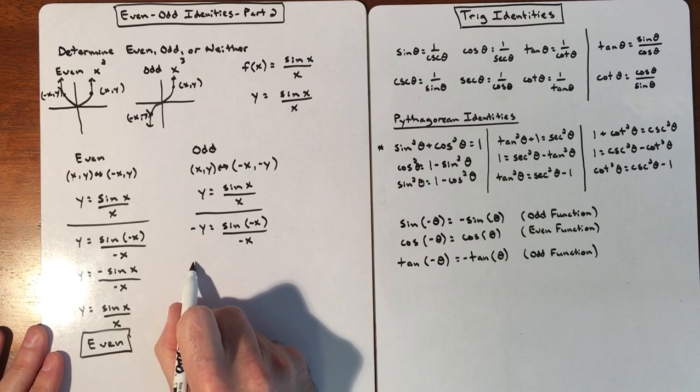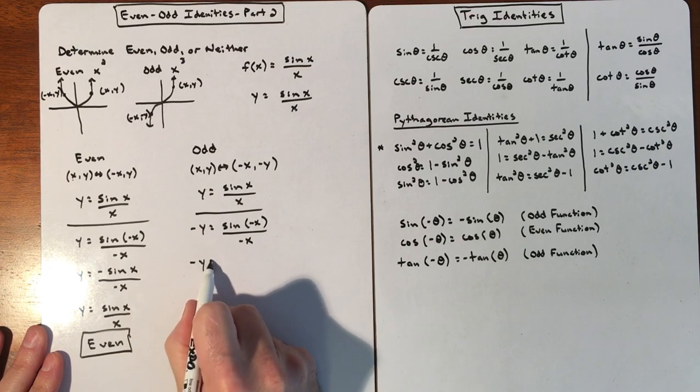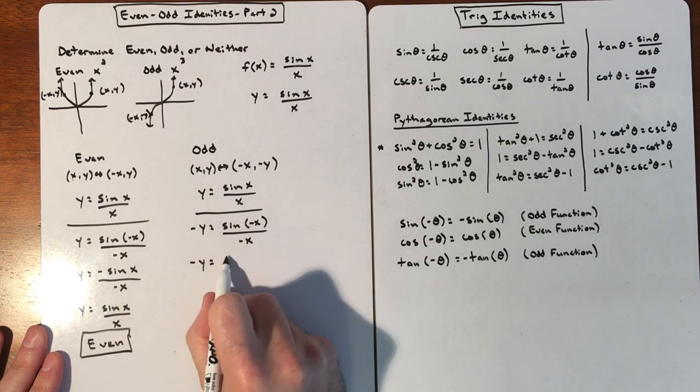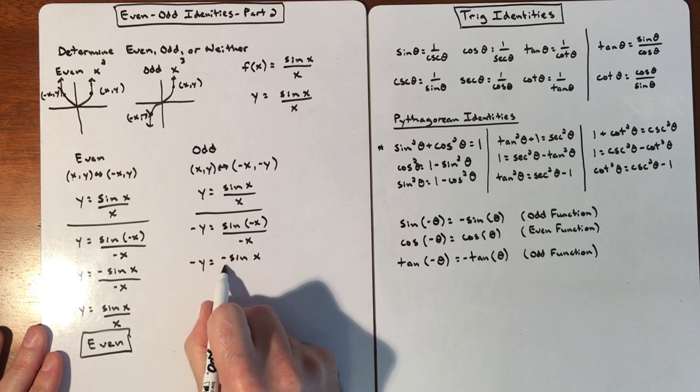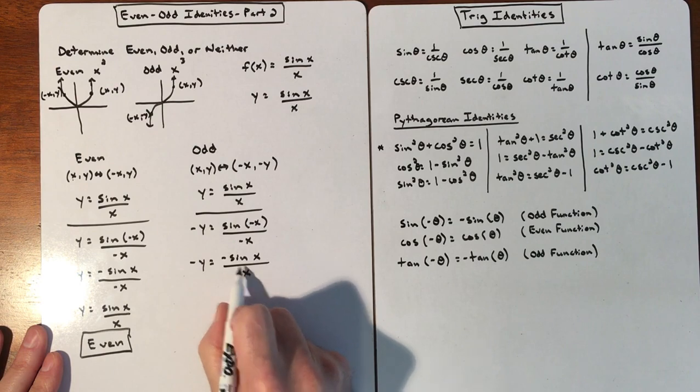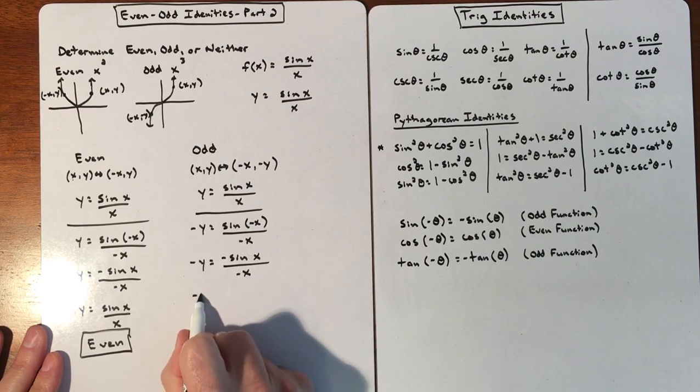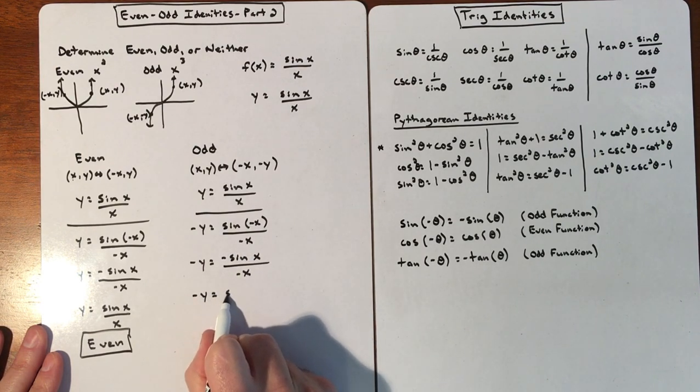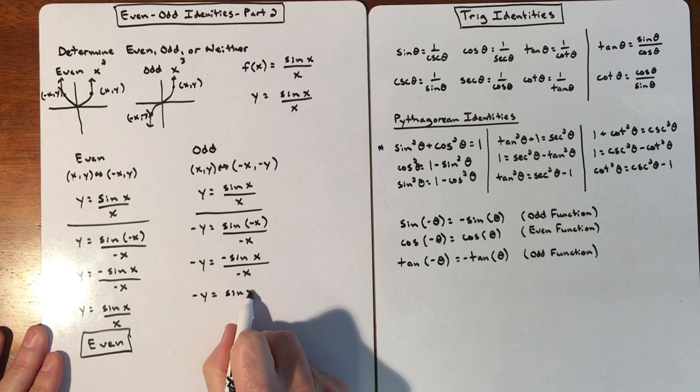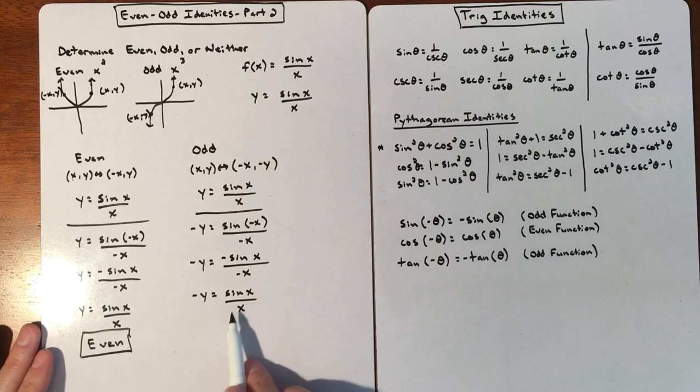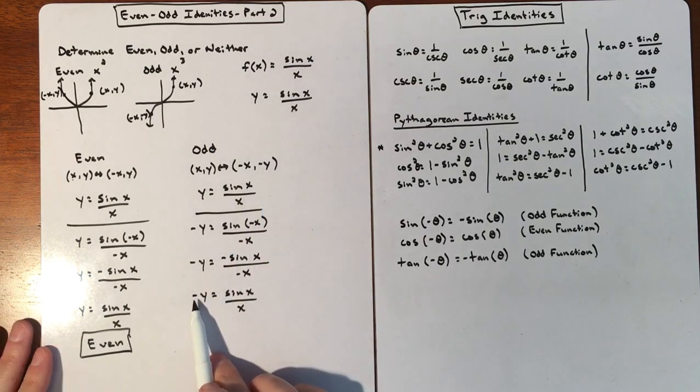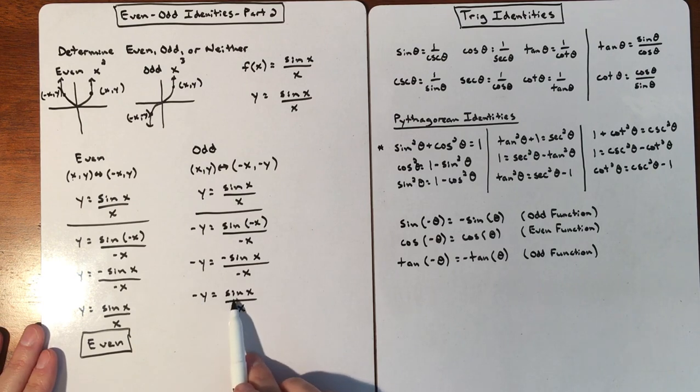All right, so nothing to do on the left. And this, just like before, we're going to rewrite as a negative sine x divided by negative x. And these cancel. So we get sine x over x. Now the goal again is to try to see if we can manipulate this in any way, shape, or form to get it back to the original.